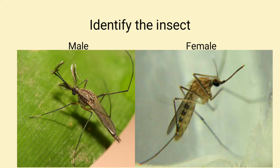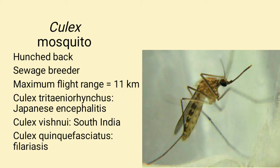Identify the insect: These are Culex mosquitoes — the left one is male and the right one is female. Culex mosquito has a hunched back; it is a sewage breeder with a maximum flight range of 11 kilometers. Culex tritaeniorhynchus transmits Japanese encephalitis; Culex vishnui is common in South India; and Culex quinquefasciatus transmits filariasis.